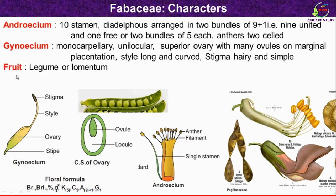Regarding the fruit: the fruit is legume or lomentum type. The lomentum type shows constrictions separating one-seeded parts, as you can see the constrictions here.